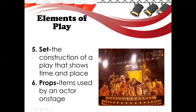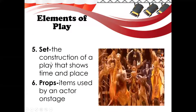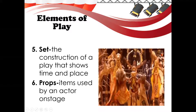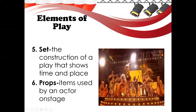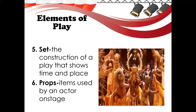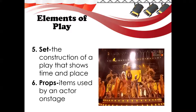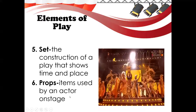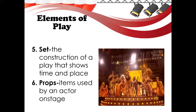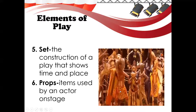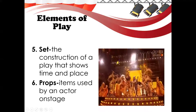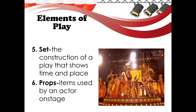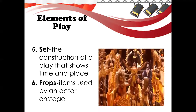We also have the set, which is the construction of a play that shows the time and place. Take a look at this example — this is the Broadway musical version of The Lion King. The set is that of a jungle. Props would be the items found within the set. We can expect that the props used and the costumes would feature animals and everything related to nature.